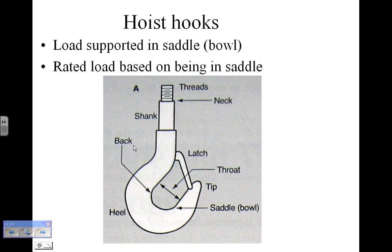Some of the terminology: you wouldn't think there would be that much to it, but there's the thread, the neck, the shank, the heel, the back, and the saddle or bowl tip. In this case you have a latch, so when you hook onto something this latch is spring-loaded and it's going to keep that down there in the saddle so that it doesn't fall out. If you're lifting a heavy load, sometimes there might be some bounce, and if it bounces and there's no latch there to hold whatever's in this throat in place, it could bounce right out of there.